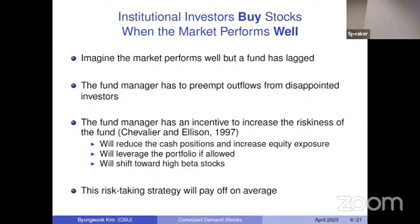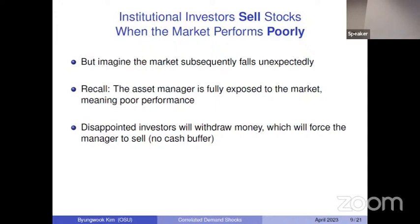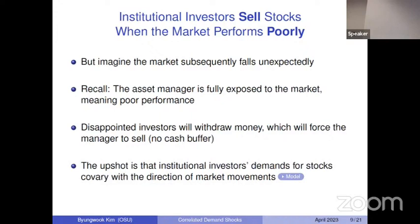When the stock market is doing well, because many active fund managers underperform as a group, they systematically increase the risk of their funds at the same time by buying more stocks for higher market exposure. This risk-taking strategy works fine on average because higher market exposure means a higher risk premium on average. However, if after increasing market exposure the stock market subsequently crashes unexpectedly, investors will be disappointed and redeem their investments. Since I increased equity exposure by decreasing cash holdings, I don't have enough cash buffer, so I'm likely to become a forced stock seller. The bottom line is that active investors' demand for stocks is likely to positively co-vary with the direction of stock market movements, potentially amplifying stock market exposures.